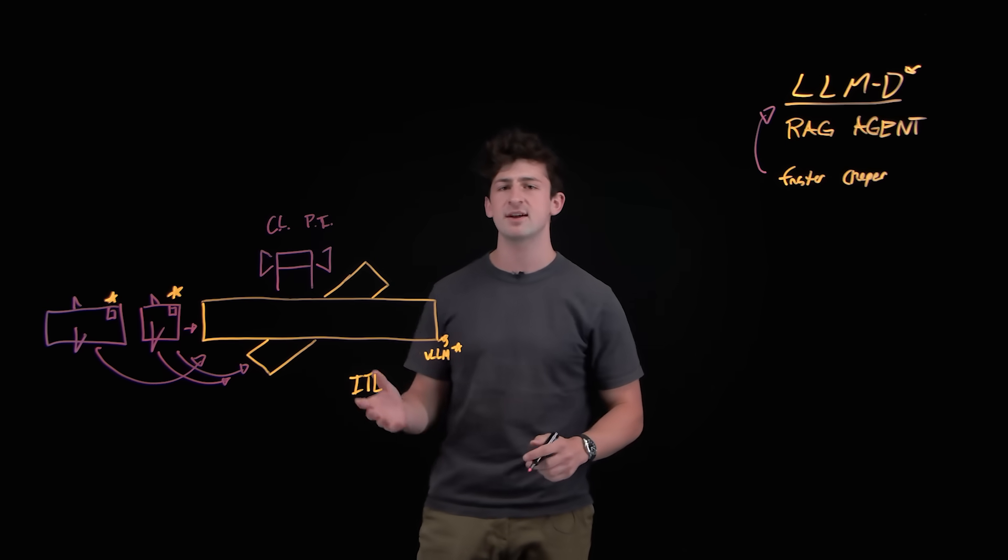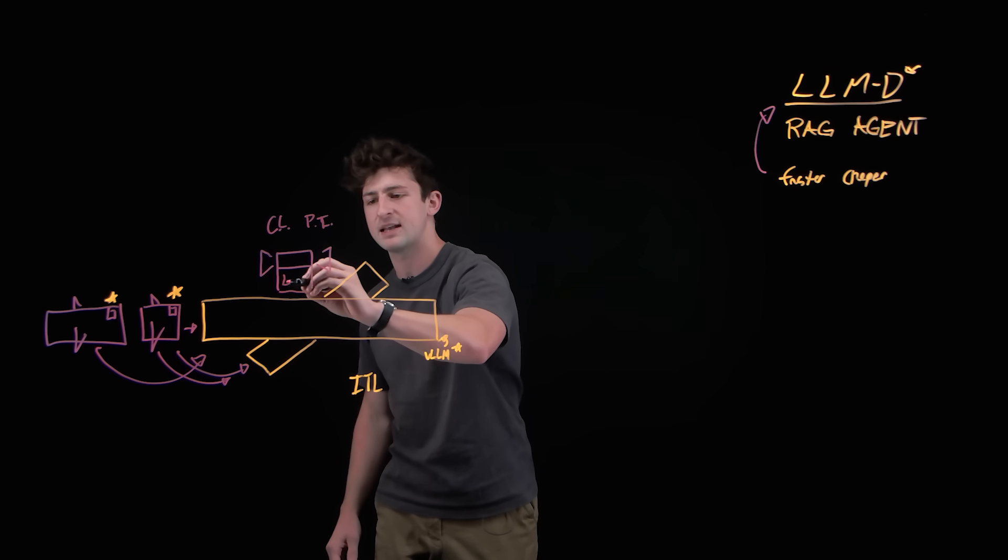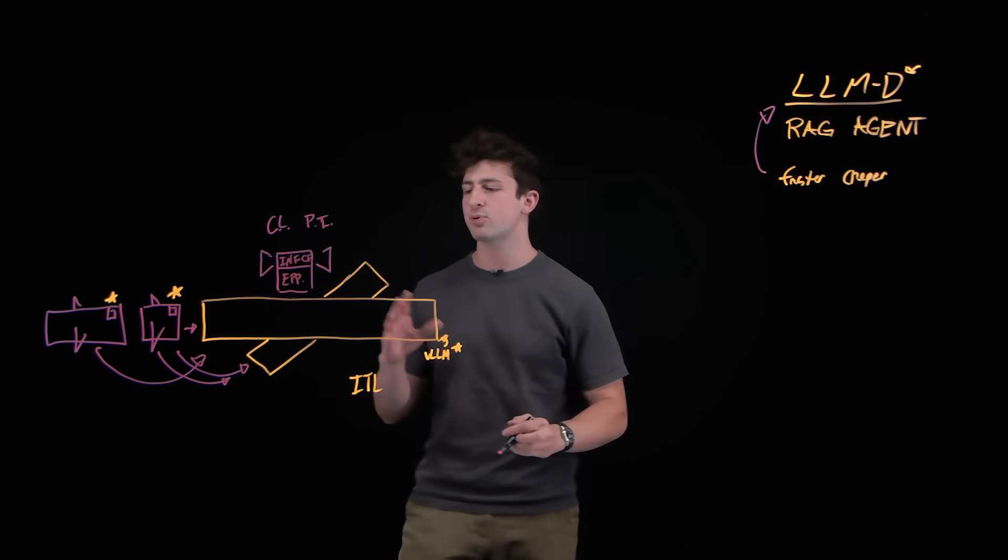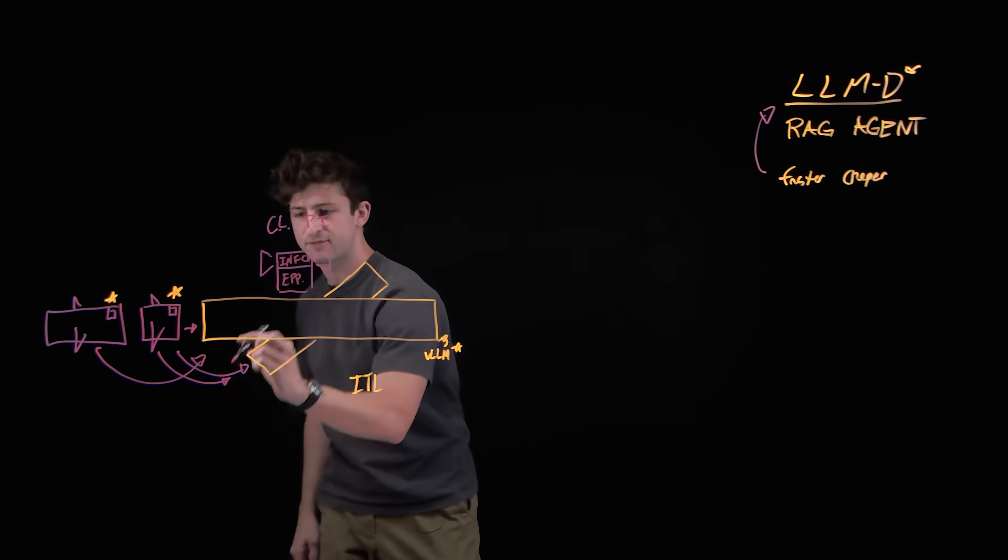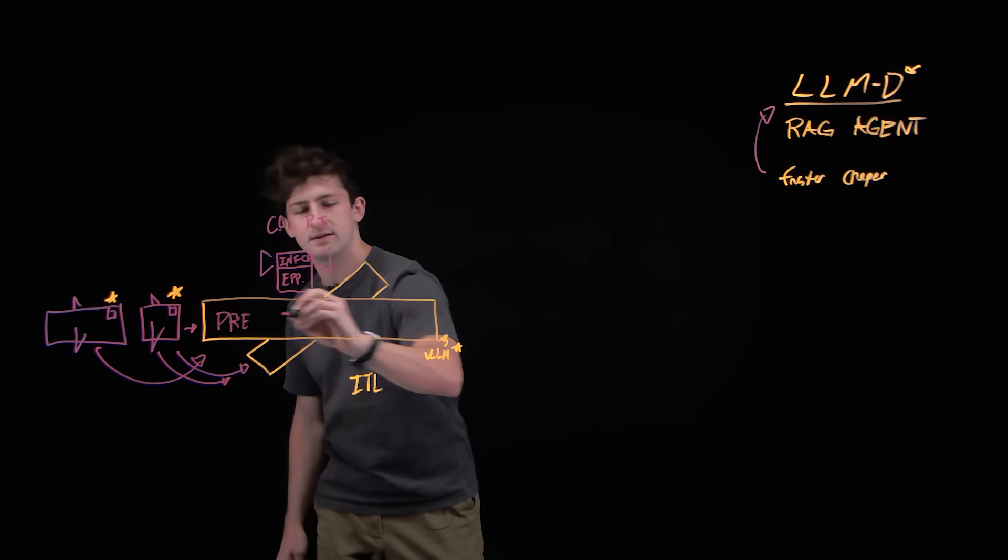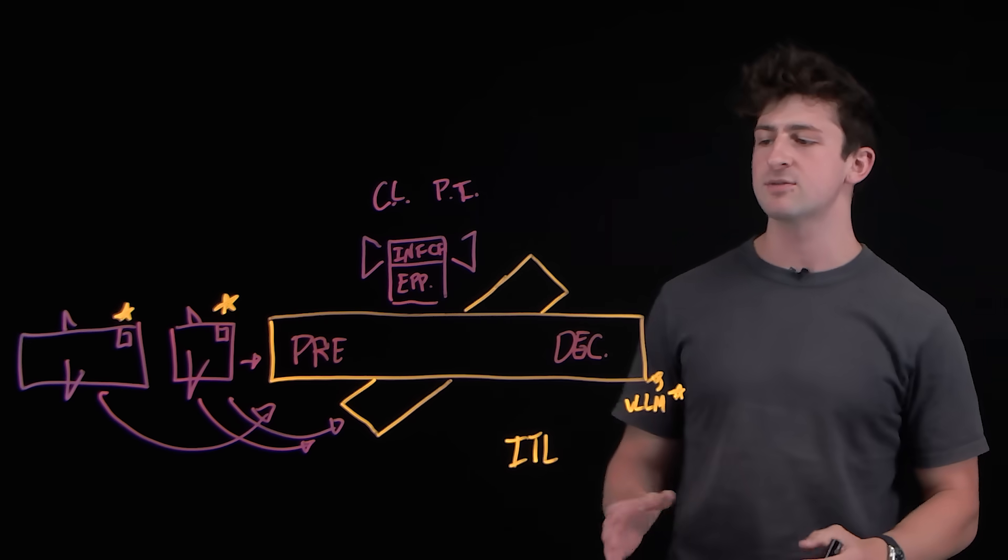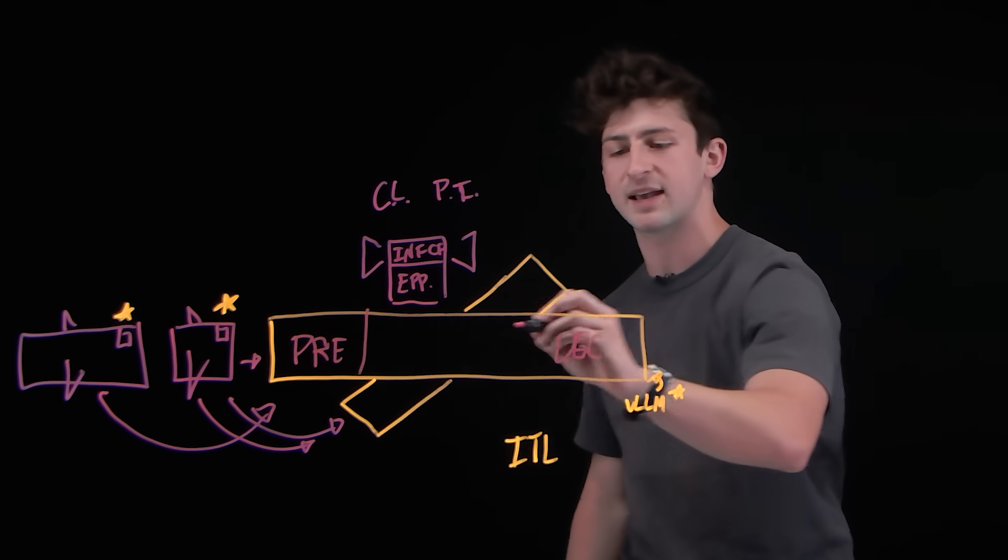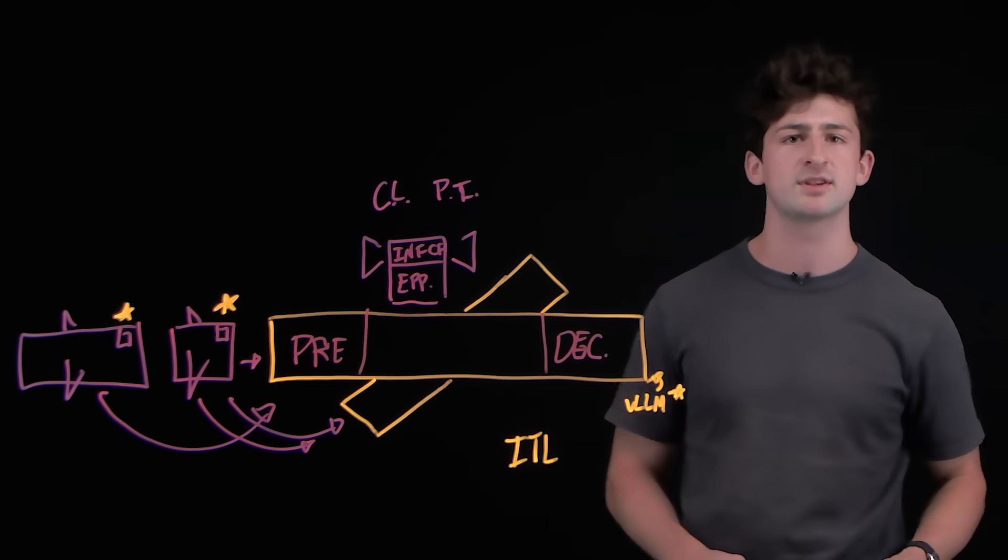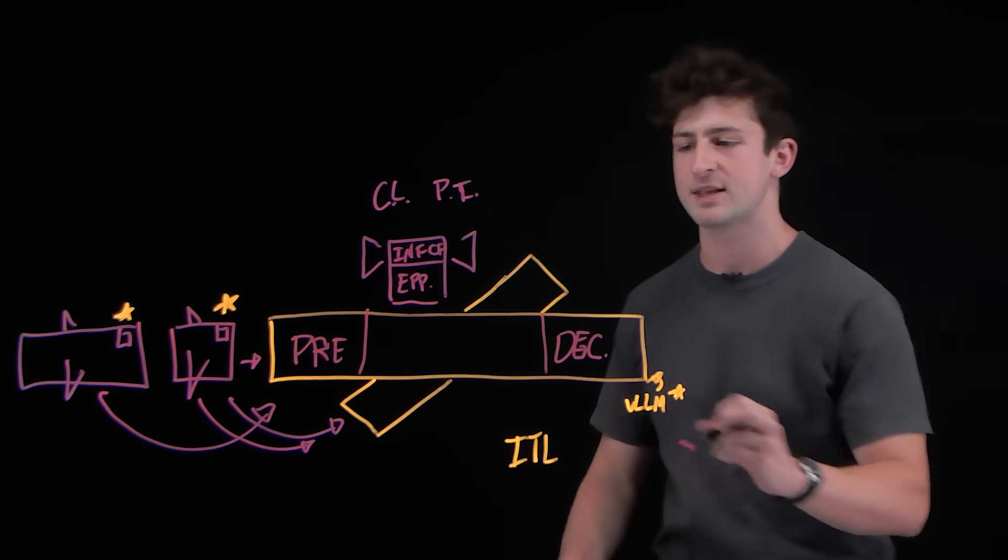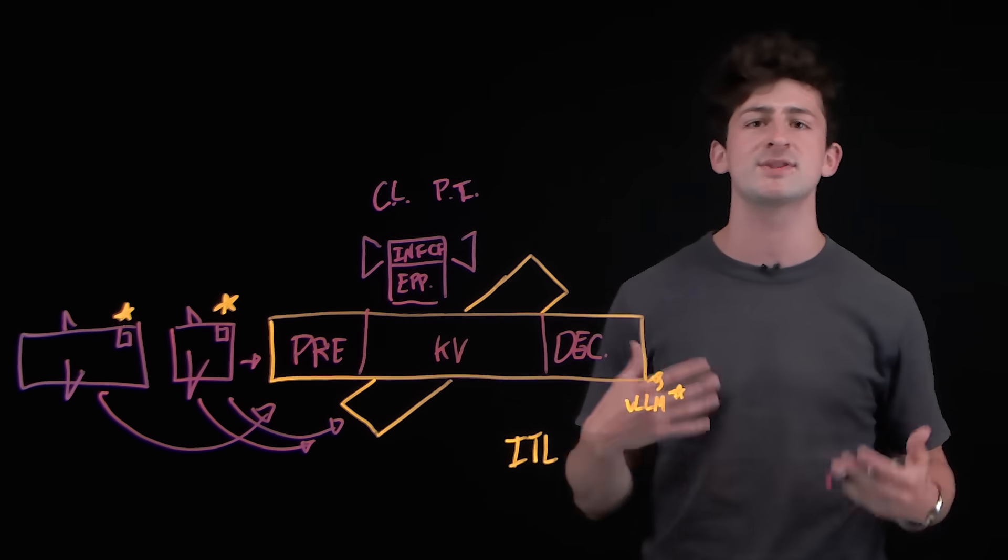So, where does it go from there? Well, based on these factors, we're using something known as an endpoint picker with an inference gateway to do these request calculations and process them in two phases, firstly known as pre-fill, where we're evaluating the request coming in, and decode, where we're actually generating a response. So, LLMD specifically goes and disaggregates these or splits them up into different workloads so that the pre-fill can use high-memory GPUs, while the decode can scale separately, but both using the same KV cache for a similar request.